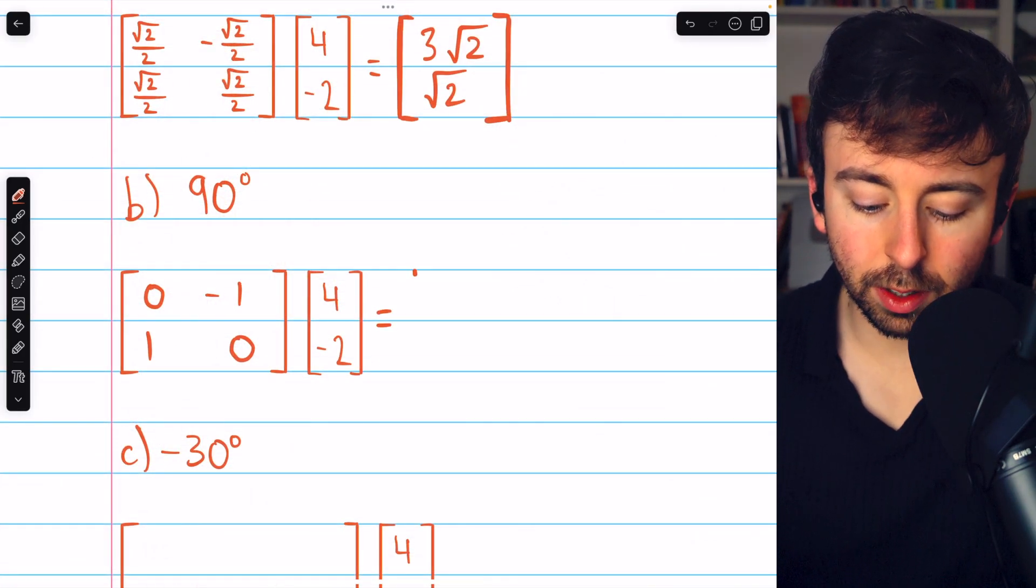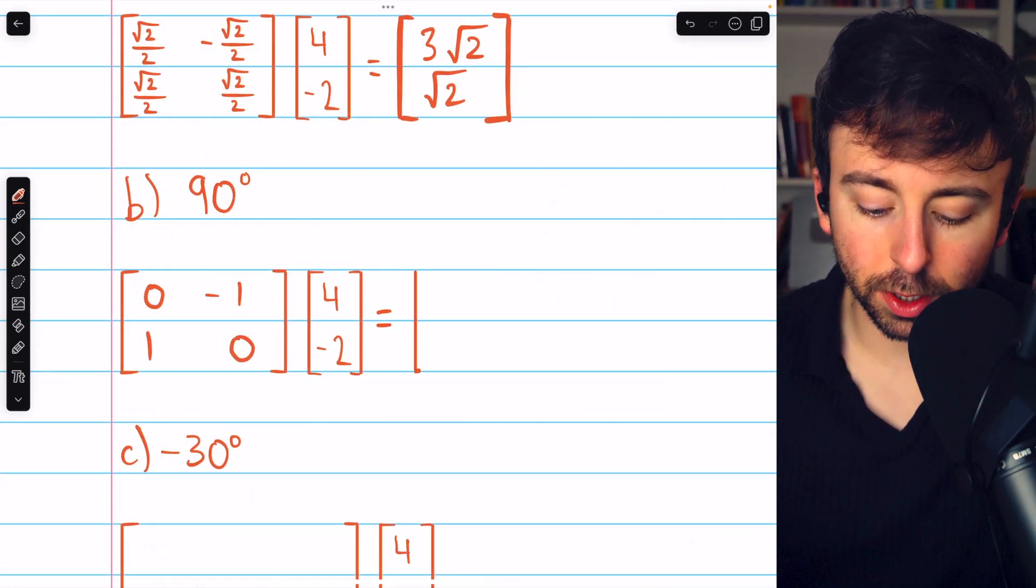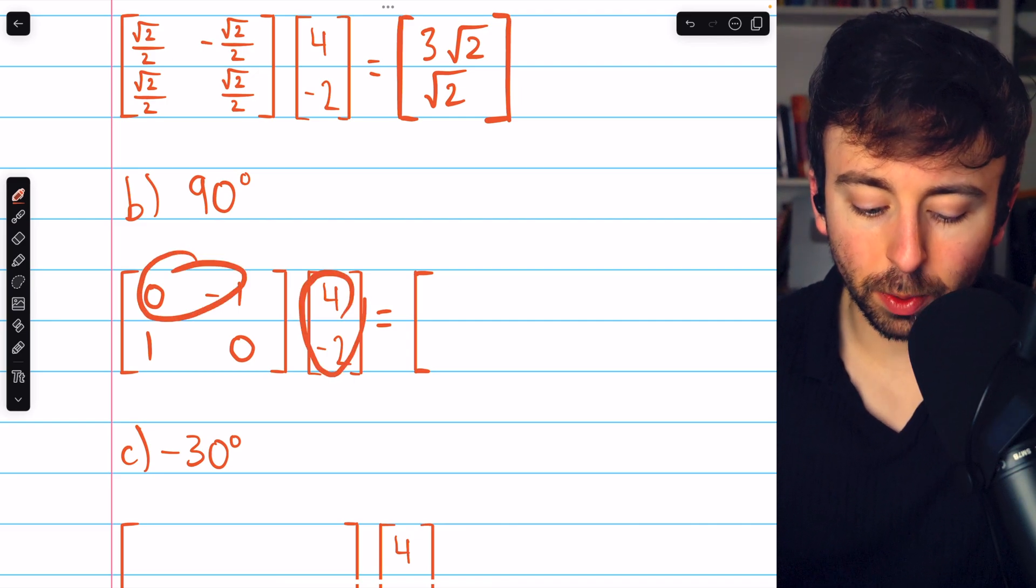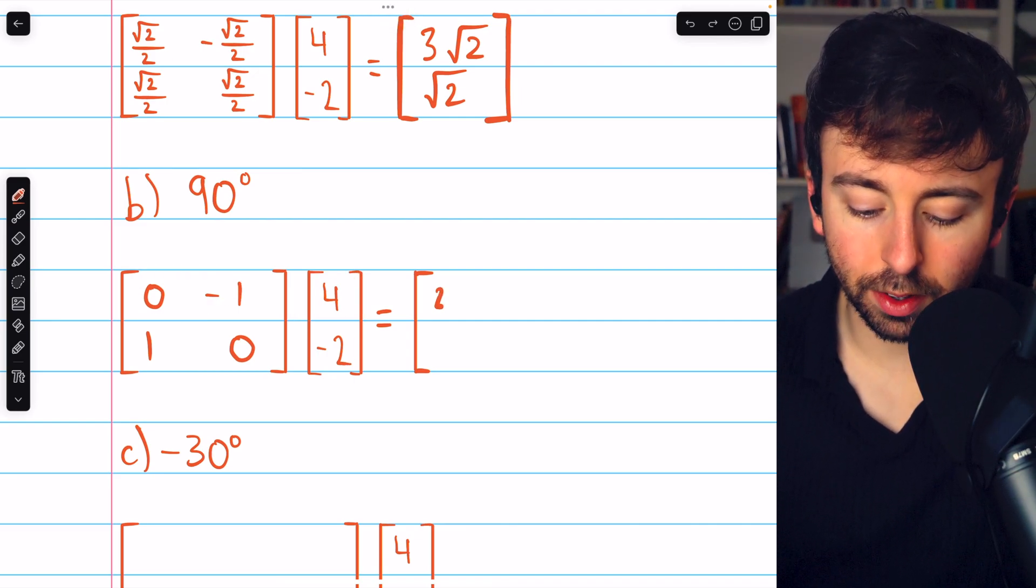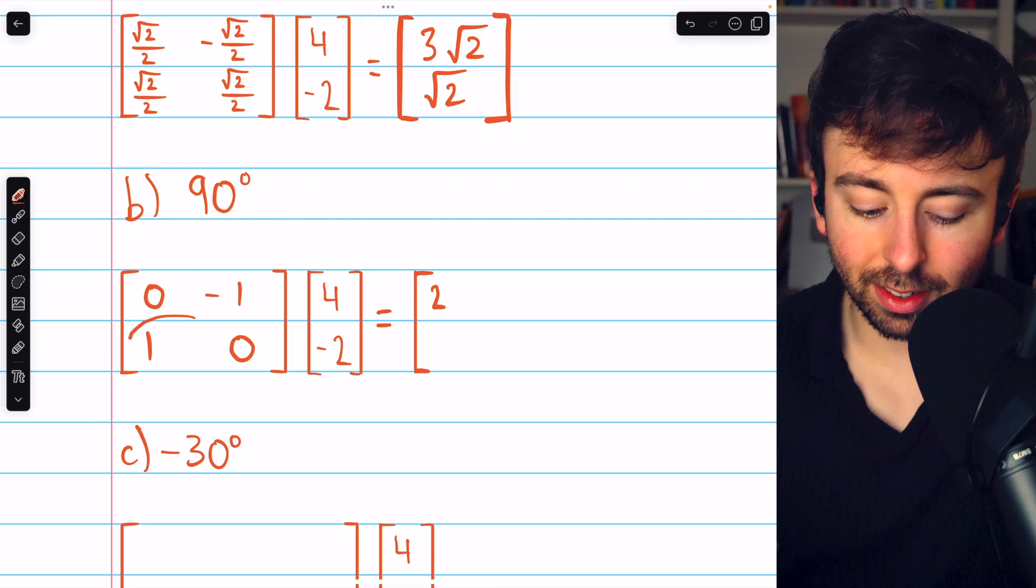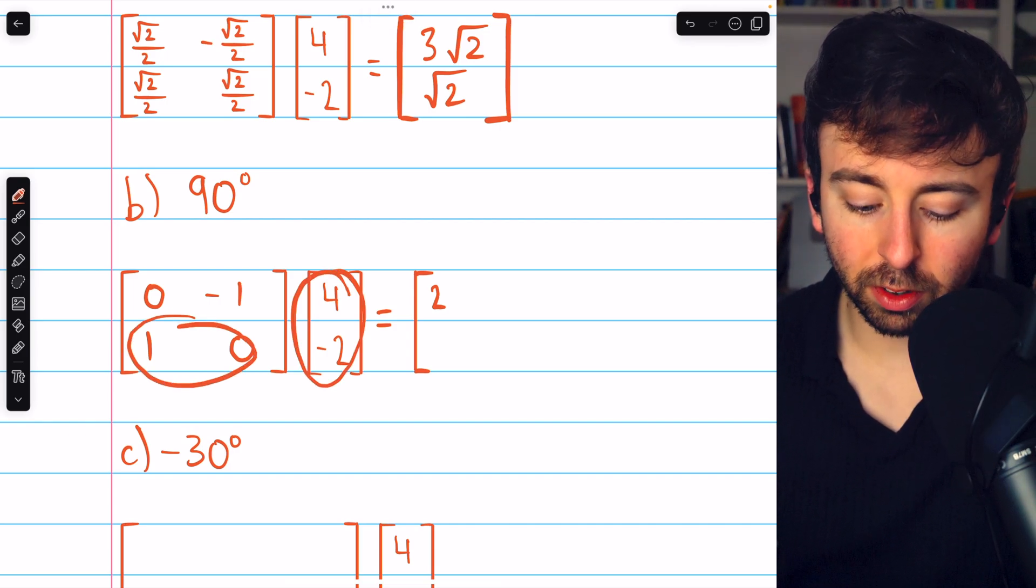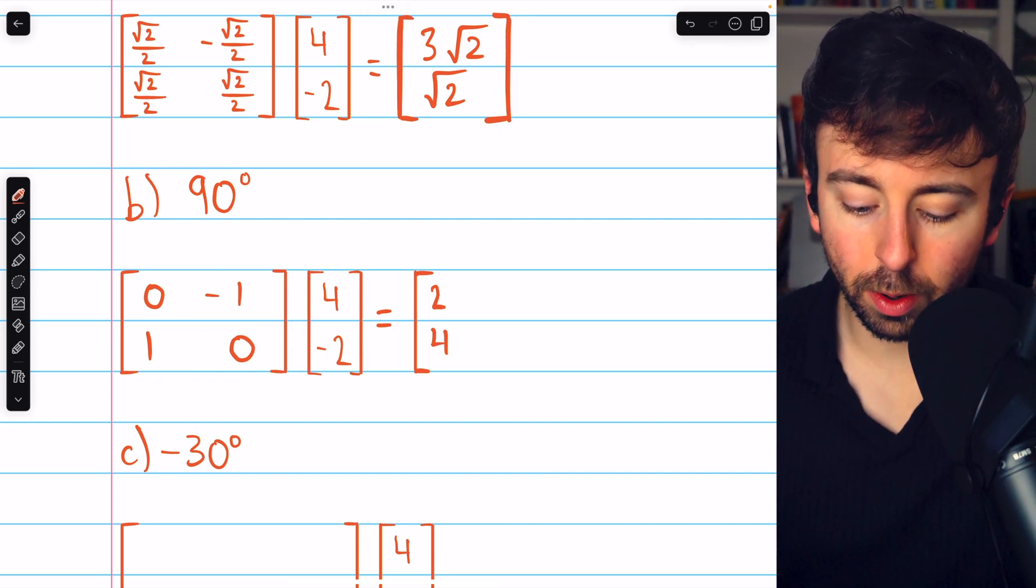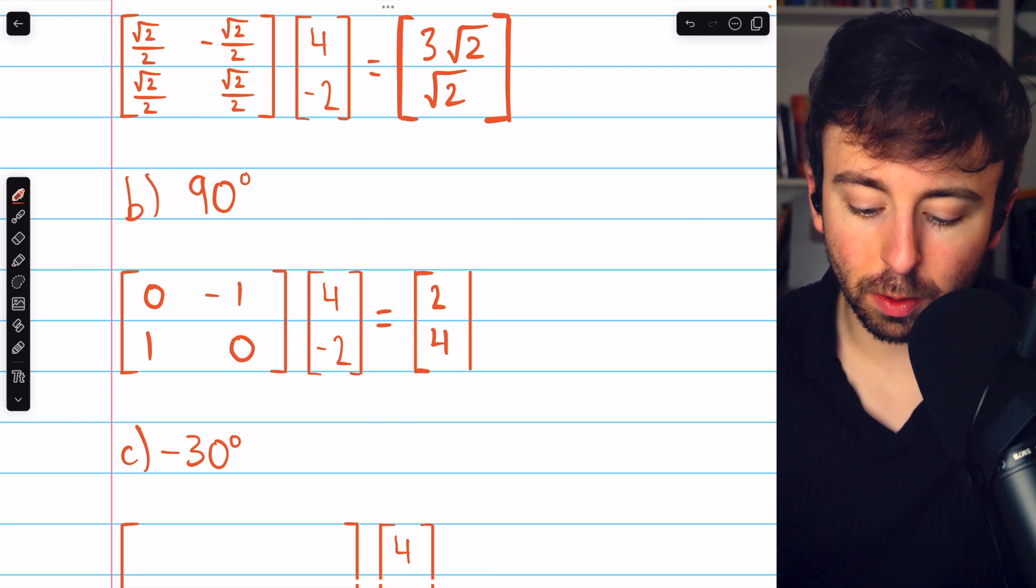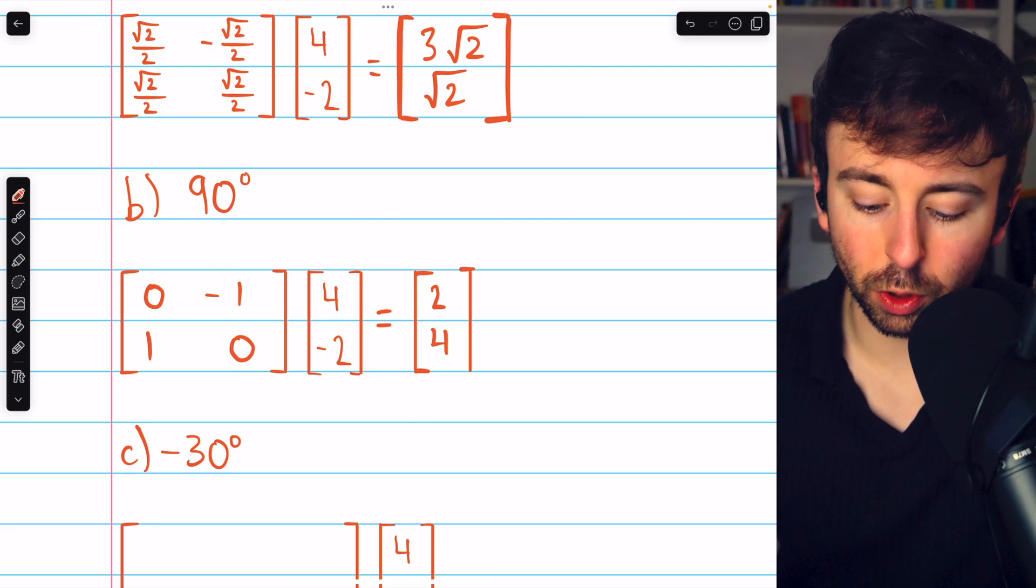All that's left is the matrix multiplication. The first row matched up with this column produces positive 2, and the second row matched up with this column produces positive 4. So the image after the rotation is the vector (2, 4).